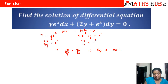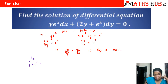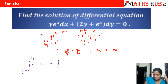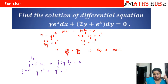Since the equation is exact, the solution is calculated as the integration of M dx — that is, ∫y·e^x dx keeping y constant — plus the integration of terms of N not containing x. N has two terms: 2y and e^x. We do not take e^x; we simply integrate 2y dy. Keeping y constant, the integration of e^x is e^x, and integration of 2y gives 2y²/2. The constants cancel, giving the final answer: y·e^x + y² = c.